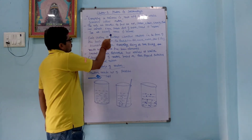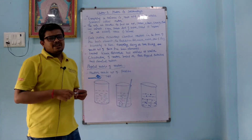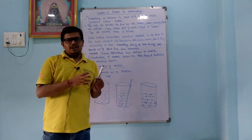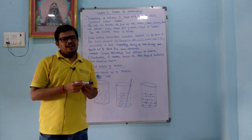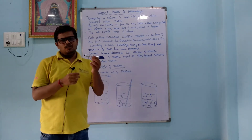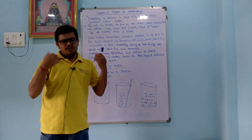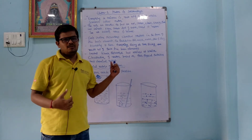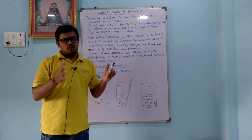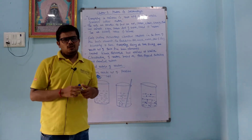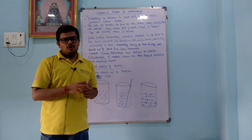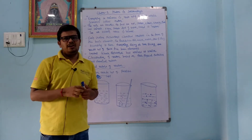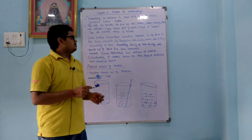Matter occupies mass and volume. This man occupies mass and volume; my body occupies mass and volume; this board occupies mass and volume; water occupies mass and volume; gaseous compounds occupy mass and volume. So they are all included in matter.